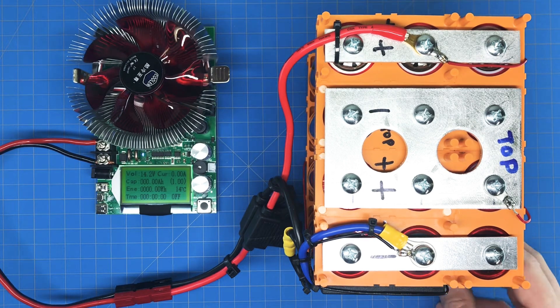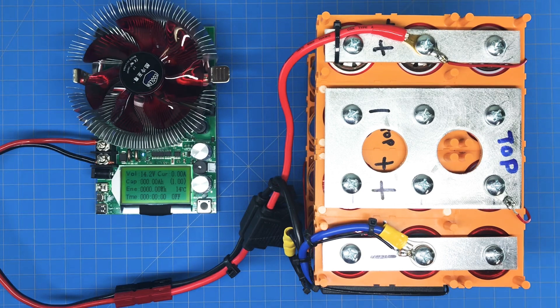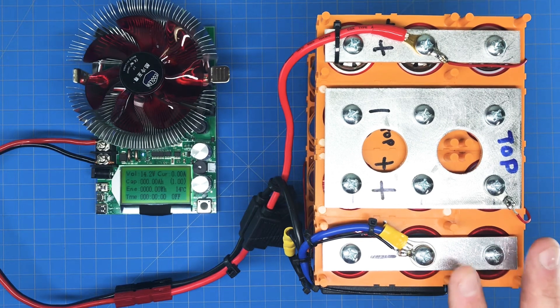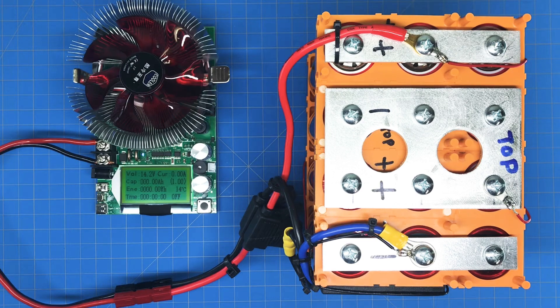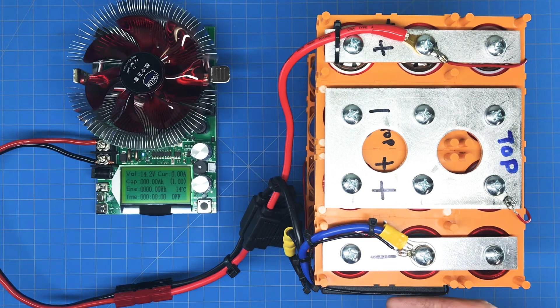We went ahead and tested each individual cell, and using that data we're able to determine that this battery will most likely be 22.5 amp hours. So we'll ensure we're getting proper capacity with this setup.